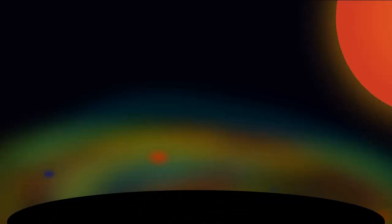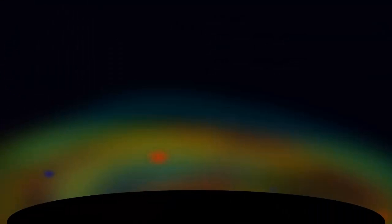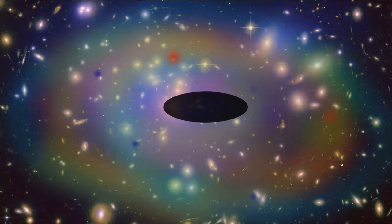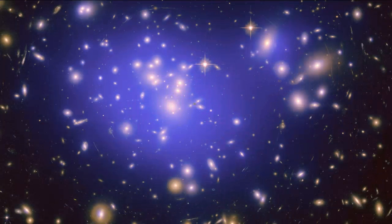And once a black hole forms, it pulls in and consumes all matter around it, including gas, planets, and even other stars. Through this process, black holes can grow to become billions of times more massive than even our own Sun. These supermassive black holes are believed to live at the center of most, or possibly all, of the hundred billion galaxies in the known universe.